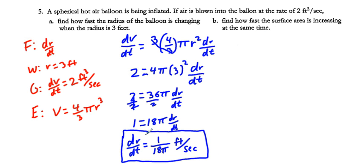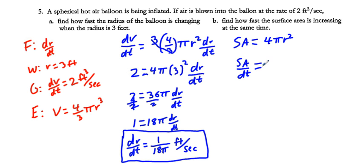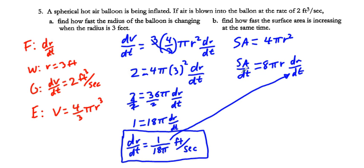We can use dr/dt to find how fast the surface area is increasing. SA = 4πr², and the derivative is dSA/dt = 8πr · dr/dt. Plug in 1/(18π) for dr/dt and simplify to find the surface area rate of change.